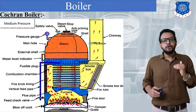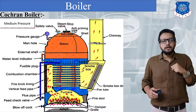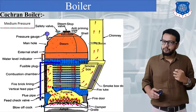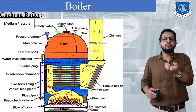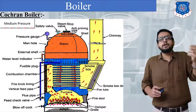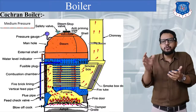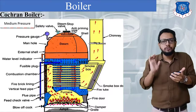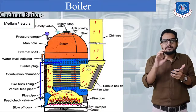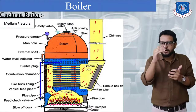Then after we are going to pour coal into the furnace through the fire door at the bottom side. After pouring the coal we are going to burn it. Hot gases will be generated inside the furnace combustion chamber. Hot gases will flow through the flue pipe and come into the combustion chamber. Through the combustion chamber hot gases will start to flow through the fire tubes, then enter into the smoke box and leave through the chimney.